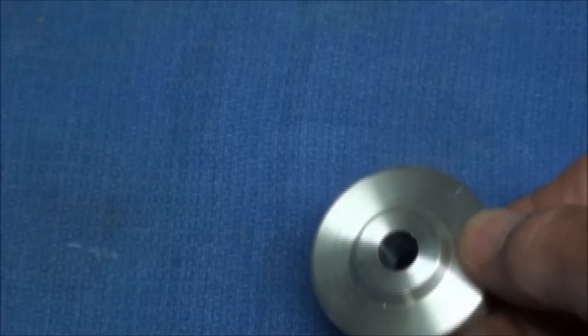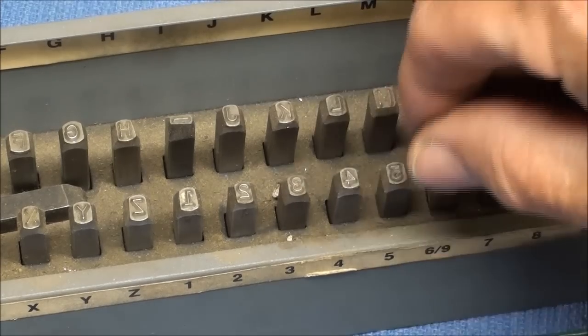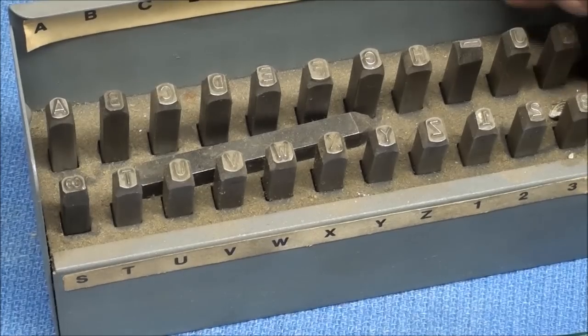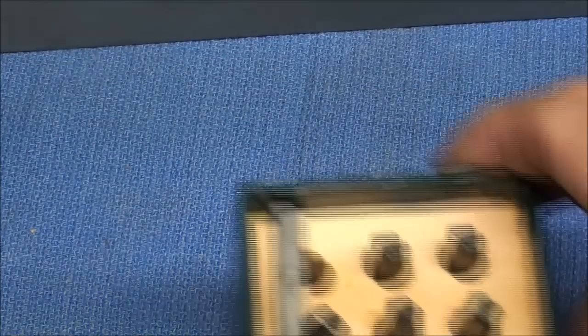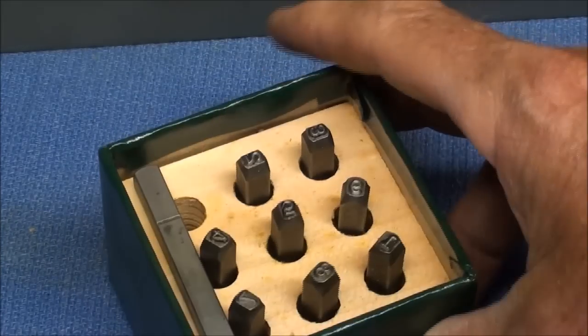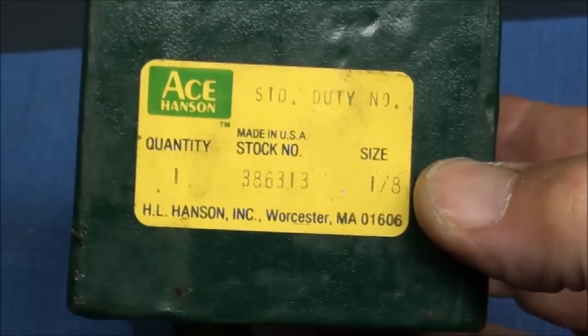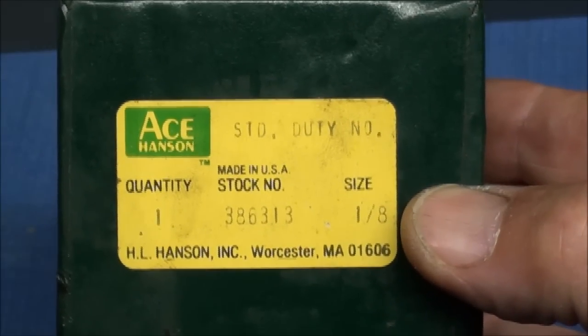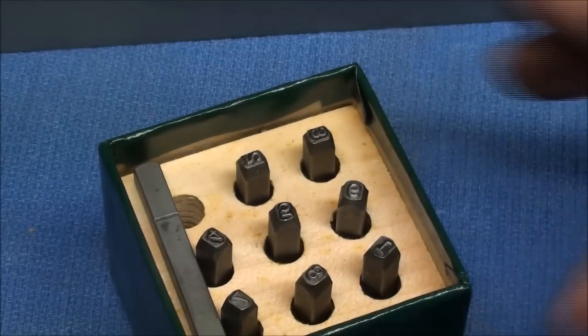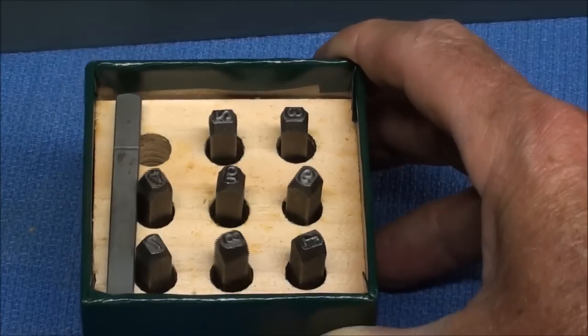Now let's talk a little bit about number stamps. Most all of you have sets of number or letter stamps. This is a complete set of numbers and letters in one case, but more likely you're going to have a set like this, and this is the eighth-inch size. Eighth-inch seems to be the appropriate size for this. You can buy them in different sizes—3/32nds and 1/16th and larger—but eighth-inch is going to fit just right.